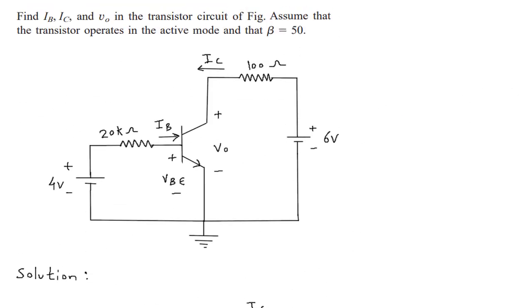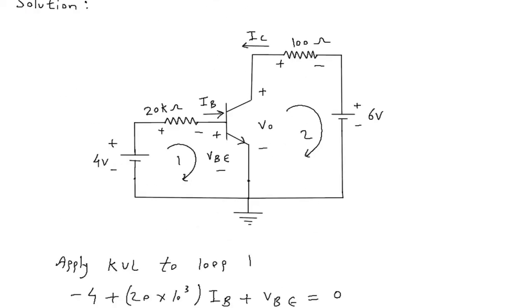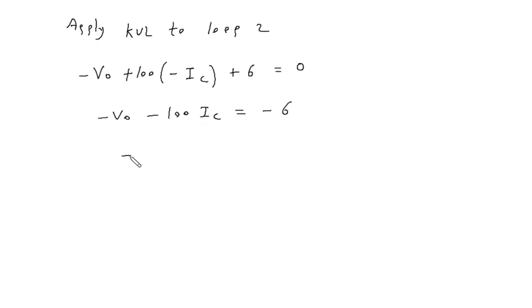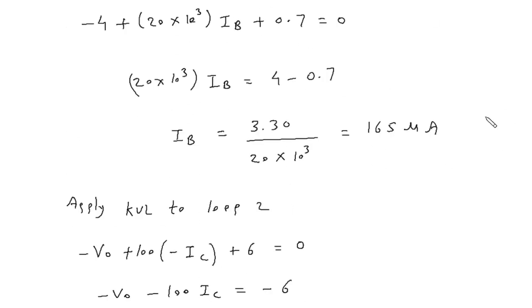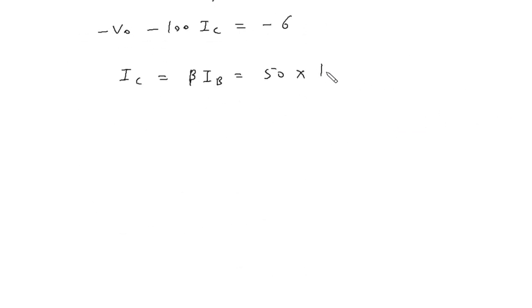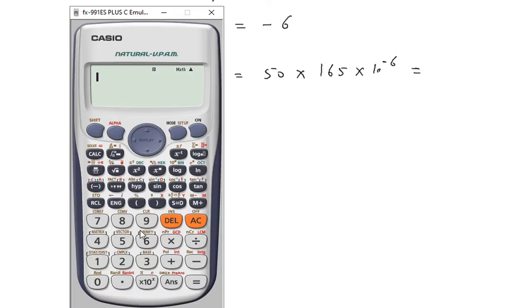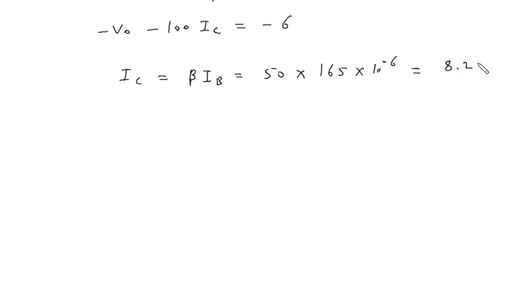Now we have beta equal to 50, so IC equals beta × IB = 50 × 165×10⁻⁶. This gives IC equal to 8.25 milliampere.